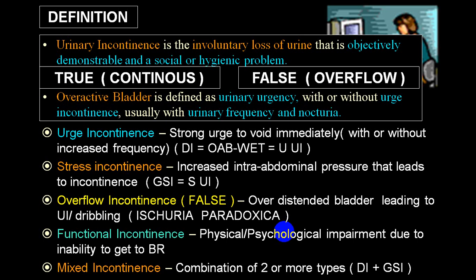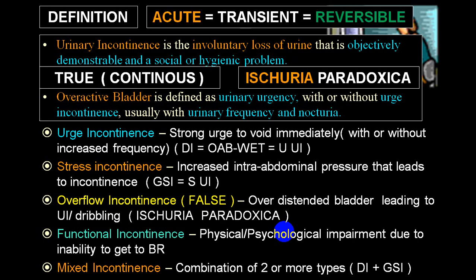True incontinence, also called continuous incontinence, is very commonly due to a congenital anomaly like a fistula. Pseudo incontinence or false incontinence is also called ischuria paradoxica. Acute incontinence is also called transient or reversible, where the person will have incontinence for a short period and it will recover on its own, while the established variety which remains for a longer period is called chronic incontinence.